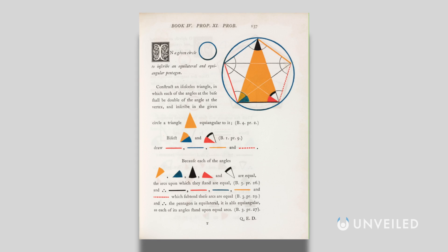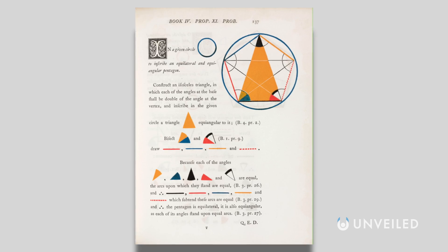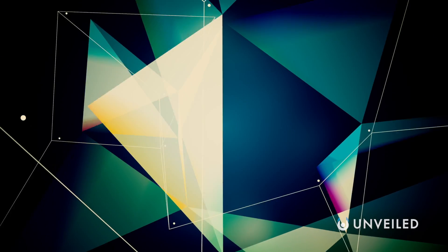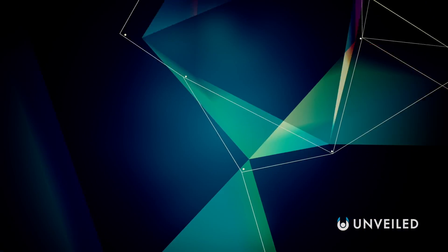In 300 BCE, Euclid published one of the most important books in history, The Elements, containing a thorough description of geometry in up to three dimensions, otherwise known as Euclidean geometry.